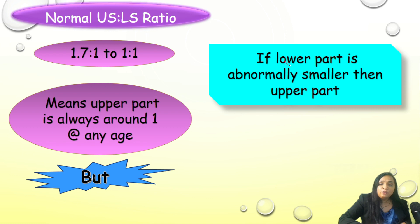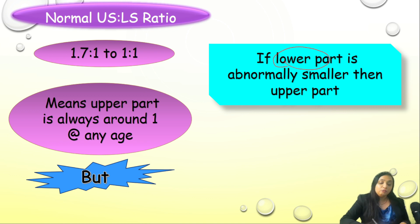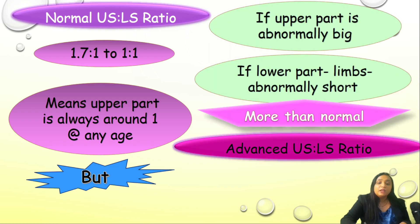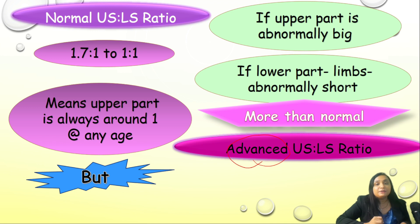Thinking the other way around: if the lower part of the body is very small in comparison to the upper part, the denominator becomes very small and we will end up with an elevated upper segment to lower segment ratio.